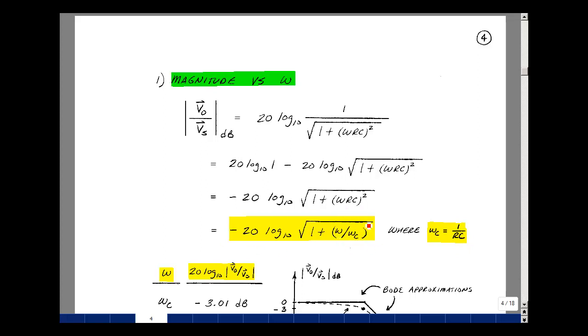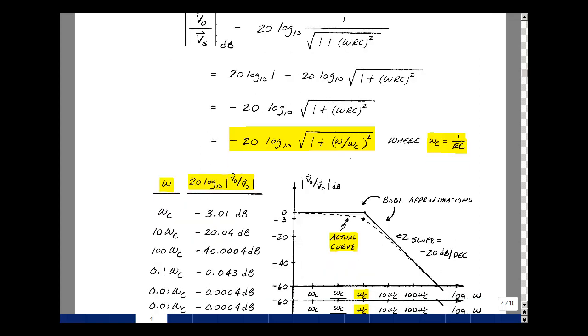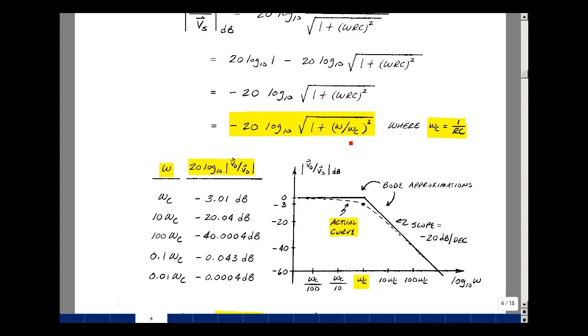So I could write this quantity here as ω over ω_c. We're solving a specific problem, but actually we can do this in general for any circuit that has this form of solution. There are op-amp circuits that look like low-pass filters and inductor circuits and so on. We're going to derive the form of the Bode plot based on this, although we're looking at a specific example.